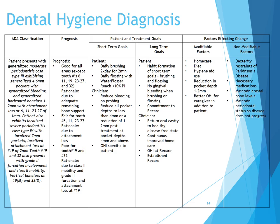Our prognosis is good for all areas except tooth numbers 6 and 11, 19, 23 to 27, and 32, with rationale due to adequate remaining bone support. It is fair for tooth numbers 6, 11, and 23 through 27 due to attachment loss, and poor for tooth numbers 19 and 32 due to Class II mobility, furcation, and attachment loss at number 19.